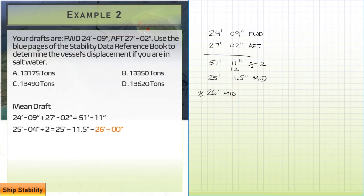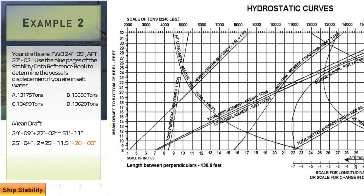Bringing up the curve again — we need to be careful to use the right water type. We have salt water this time, not fresh water like the last question. Usually one of the answer choices is a red herring based on mixing up the two curves, so we want the bottom line this time. Plotting 26 feet on the draft axis and intersecting with the salt water displacement curve, we land right around 13,500 tons. Looking at the answer choices, the closest is 13,620 tons, so the answer is D.